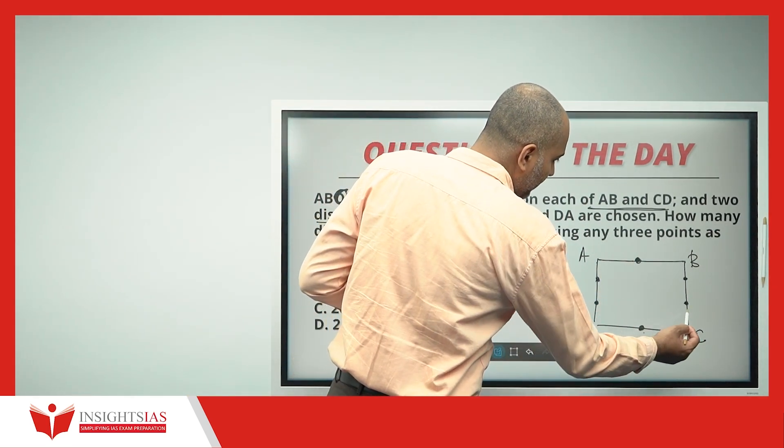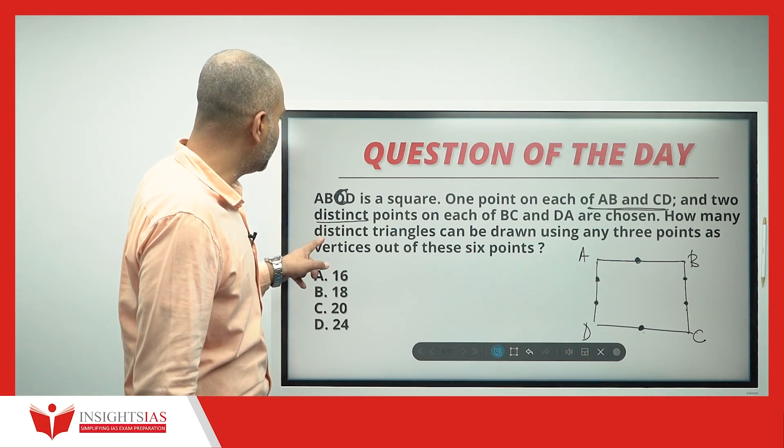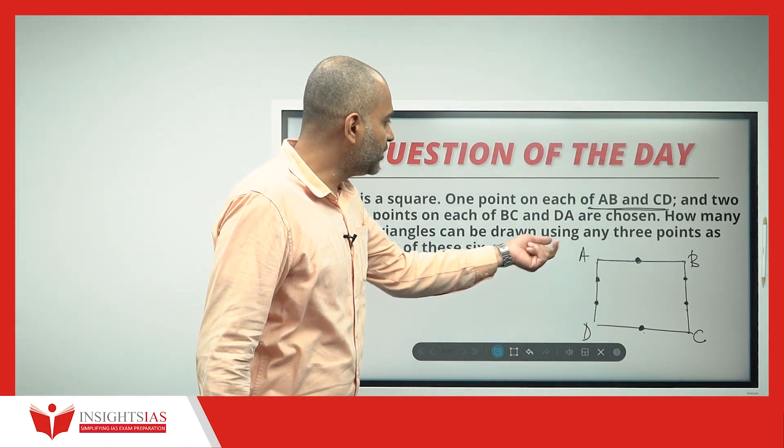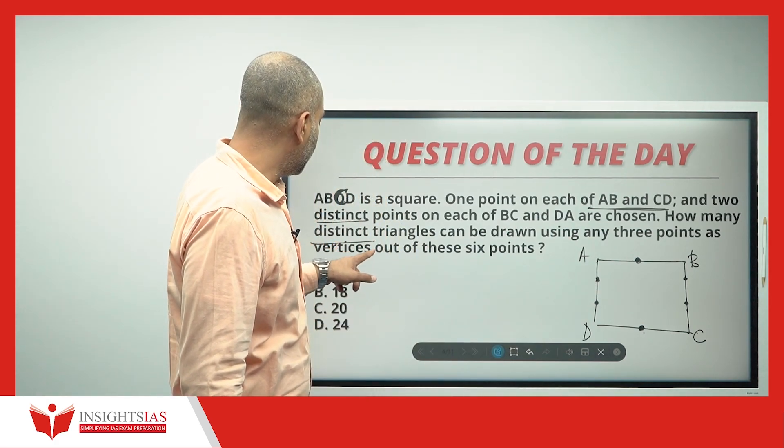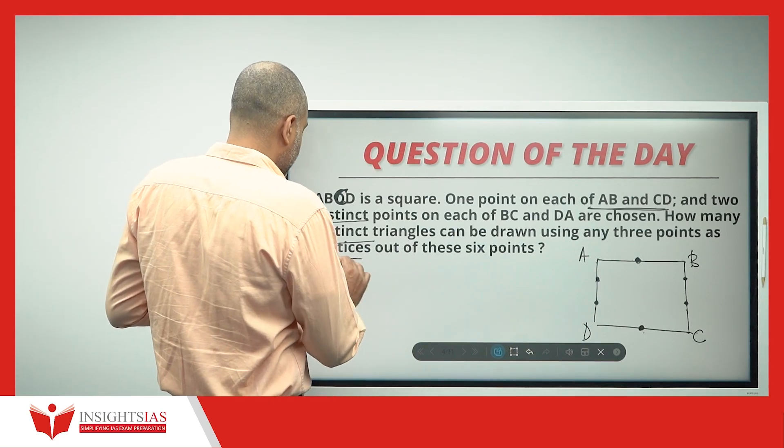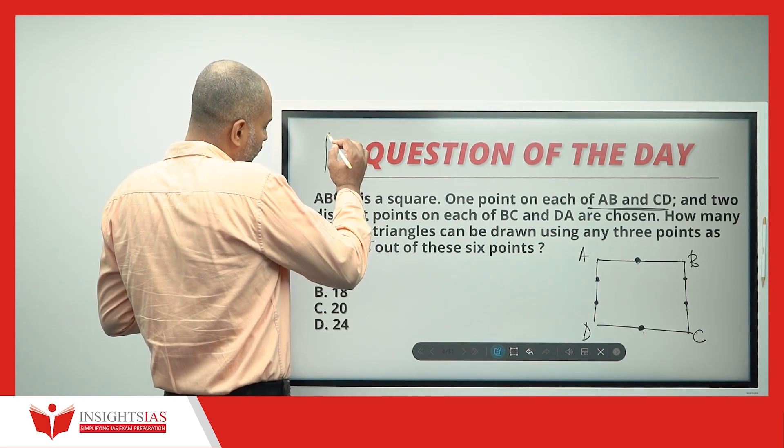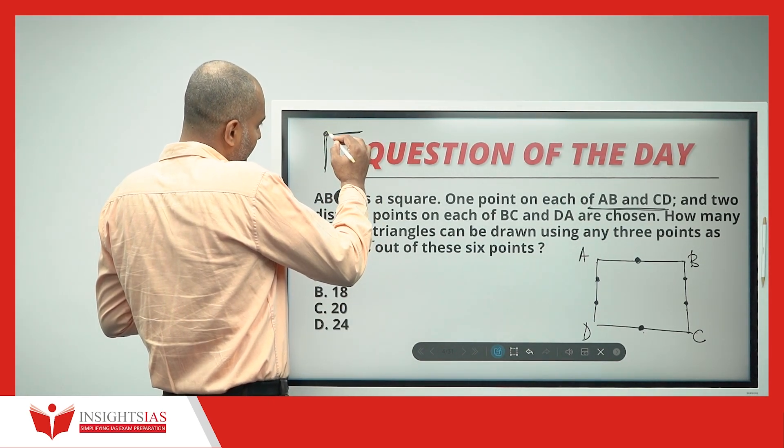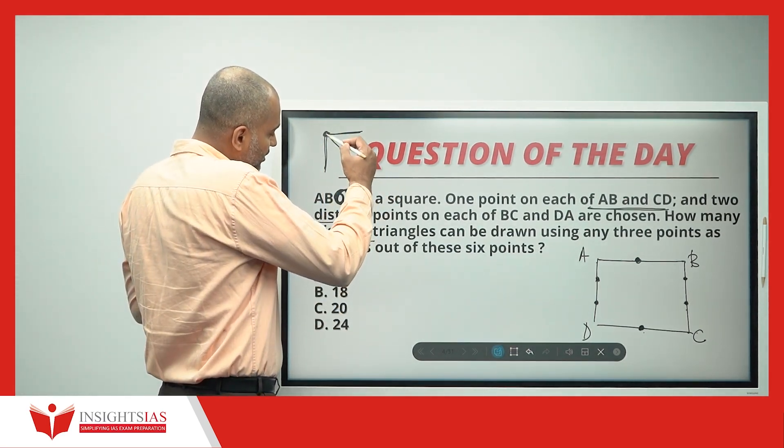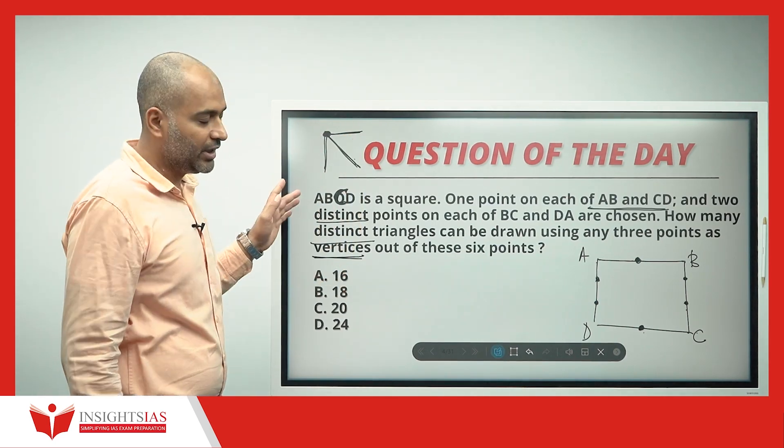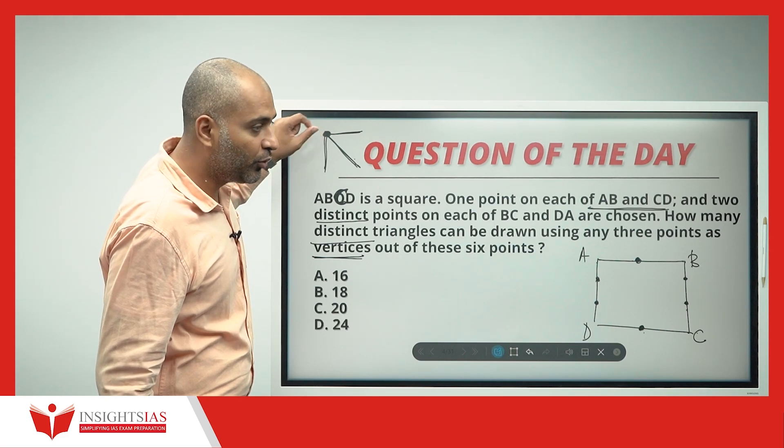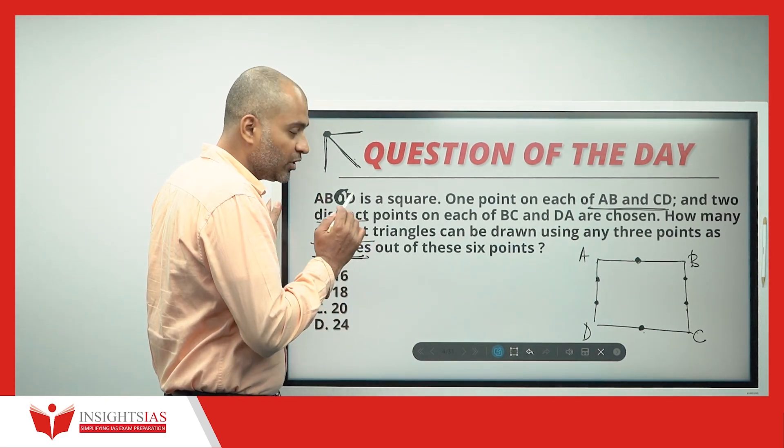Totally, 1, 2, 3, 4, 5, 6 points are there. How many distinct triangles can be drawn? Distinct again, different triangles can be drawn using any three points as vertices out of these six points. See, vertex means wherever two lines join, a point is created. That point is called vertex. Two or more lines joining intersection point is called vertex.